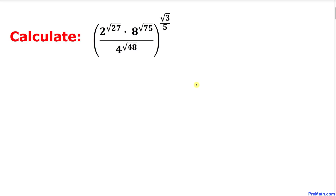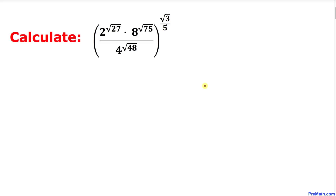Welcome to pre-math. In this video tutorial we are going to calculate the value of a rational expression that involves not only exponents but also radicals. Our problem looks like 2 power square root of 27 times 8 power square root of 75 divided by 4 power square root of 48, then this whole thing power square root of 3 divided by 5. Let's get started with the solution and simplify this problem piece by piece.